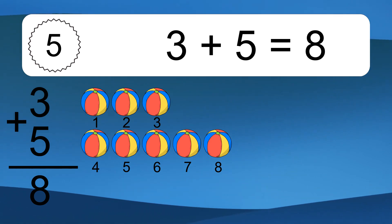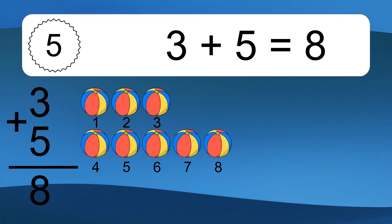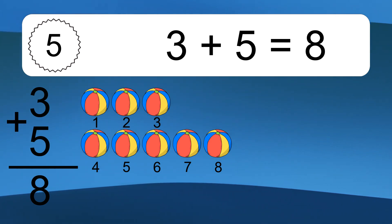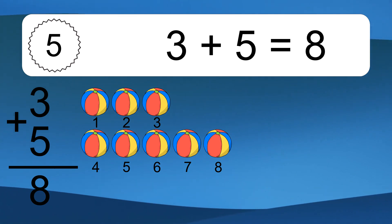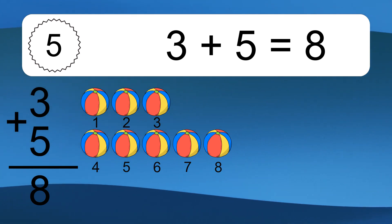3 plus 5 equals 8. Let's count it. 1, 2, 3, 4, 5, 6, 7, 8.